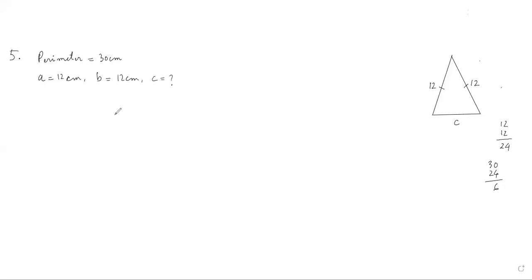So we know A plus B plus C equals 30. Perimeter is 30. 12 plus 12. So 30 minus 24 is 6 centimeters.